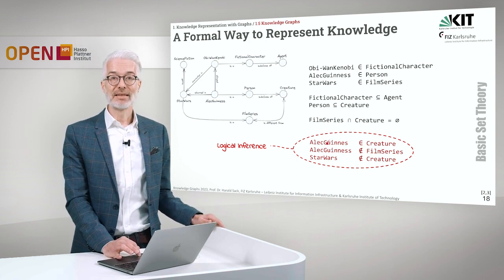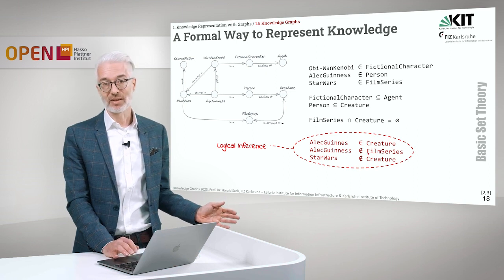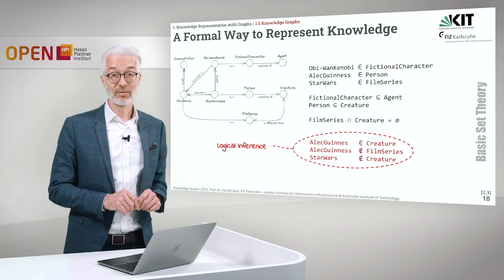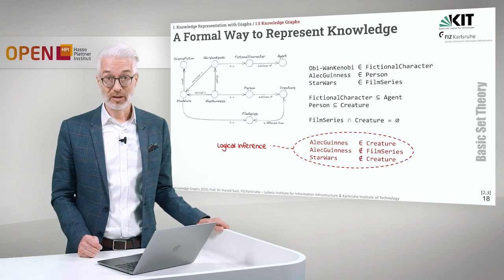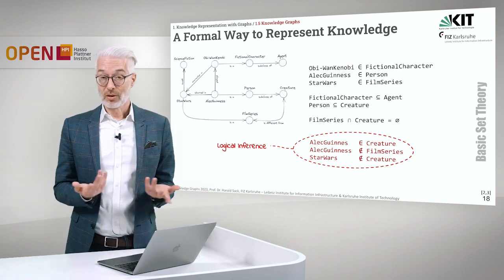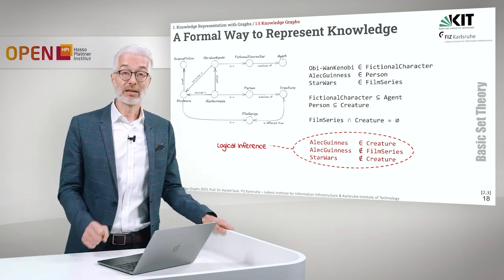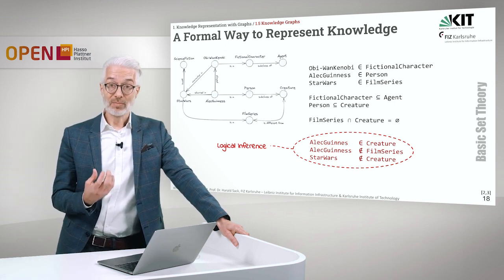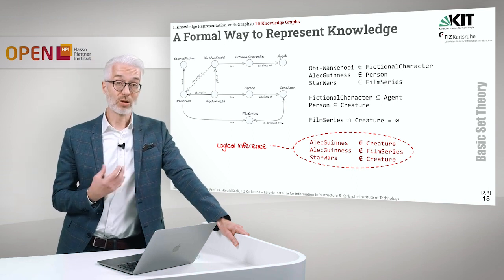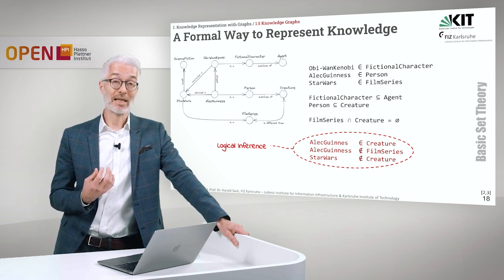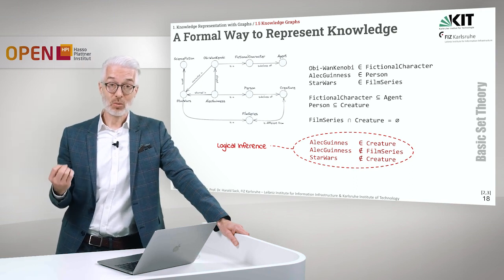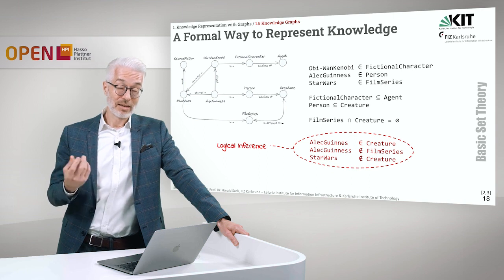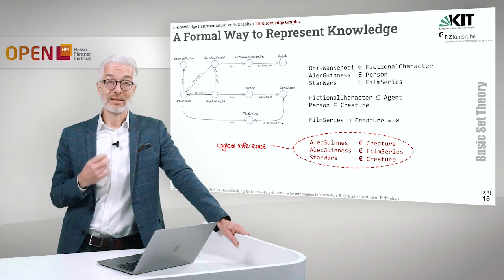Since Alec Guinness is a person and thereby also a creature, it cannot be a film series, and the same holds for Star Wars. This is the way we can relate logic — here only basic set theory and a bit of first-order logic are needed for these kinds of deductions. We can use a general program called a logical inferencer to draw these conclusions and work with the knowledge represented in the knowledge graph. We might also be able to define classes in a more complex way, with more constraints, so that the machine really is able to understand the content without having to individually encode everything through the programmer's mind. This is what we mean by explicit knowledge representation and explicit semantics.